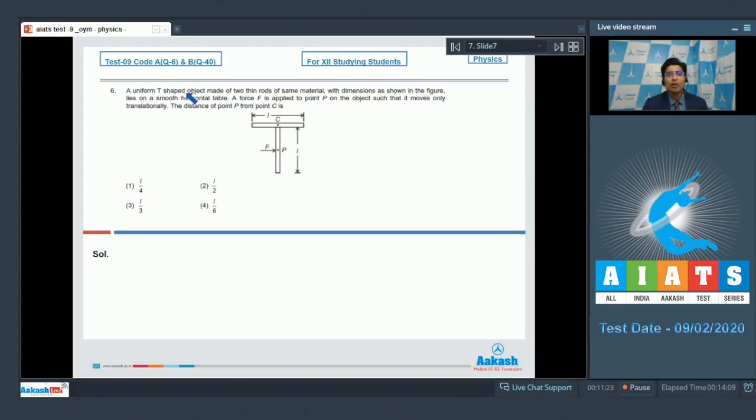As per Q6, a uniform T-shaped object made of two thin rods of same material with dimensions as shown in the figure lies on a smooth horizontal table. A force F is applied to point P on the object such that it moves only translationally. The distance of point P from point C is.